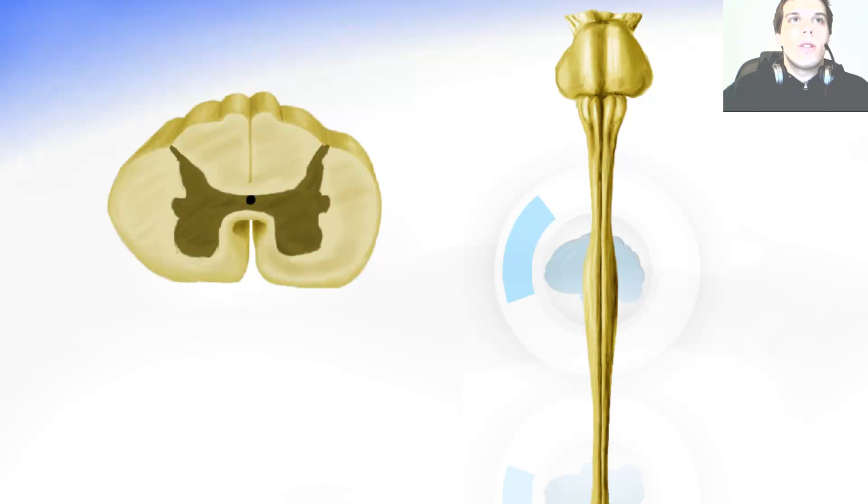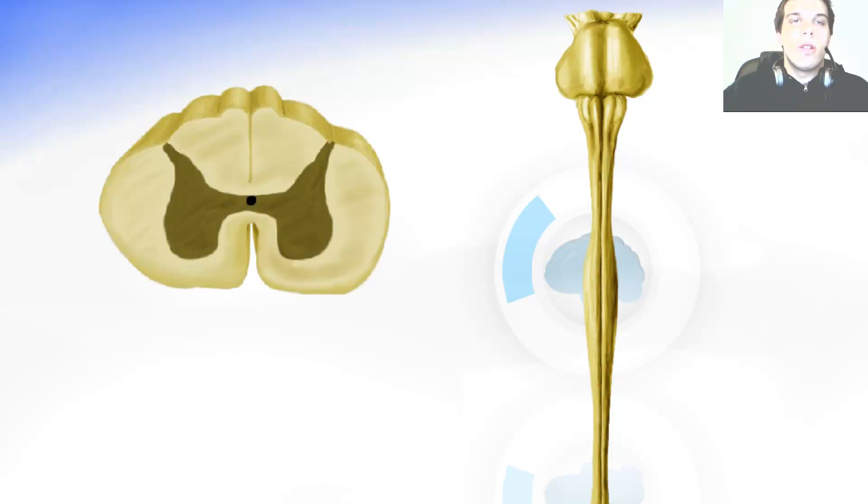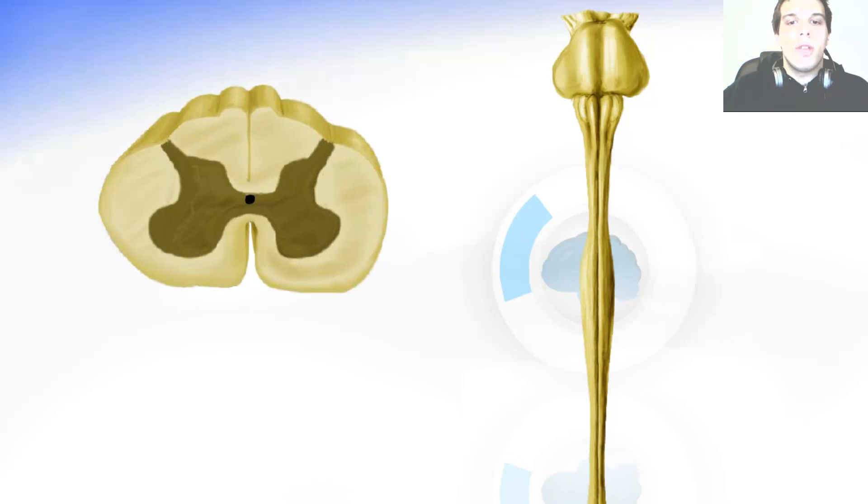Now the lumbar part is going to look different. It is going to be bigger and have different gray matter shape. And of course then comes the sacral part. It is going to be smaller and also a different gray matter shape.